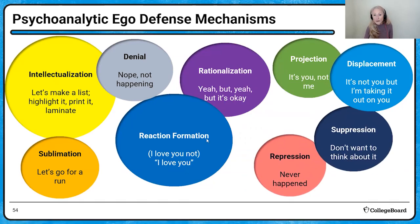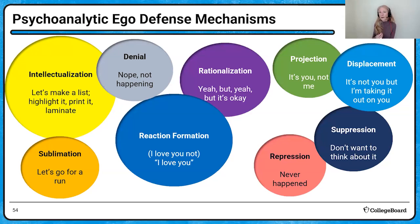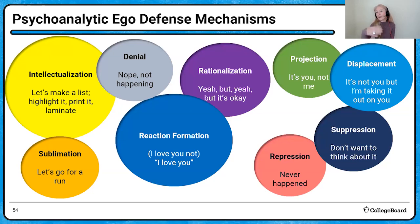One is projection and one is displacement — often confused with each other. With projection, we often feel bad about ourselves — maybe we feel we're not smart, not athletic, not making good friends — and then we project onto others: 'You're just not a very friendly person,' or 'You're not very smart.' But really what you're feeling is that you're not those things — and that's called projection.